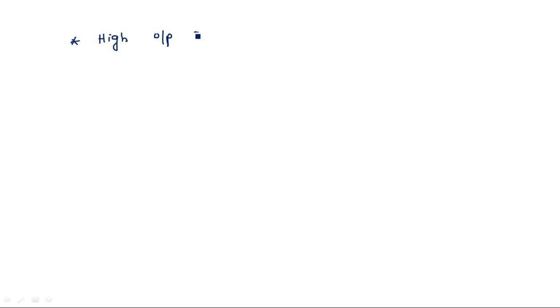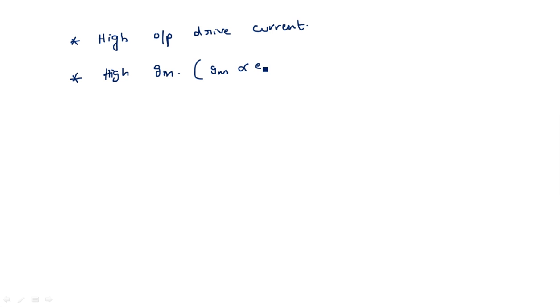Bipolar technology has high output drive current and high transconductance gm, where gm is proportional to e^(Vin). This is in contrast to CMOS where gm is proportional to Vin. Bipolar also offers high Ft at low currents.